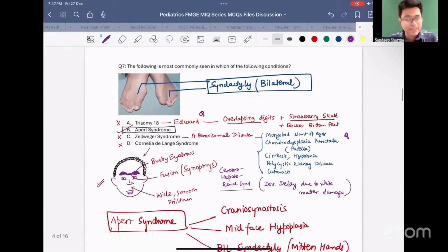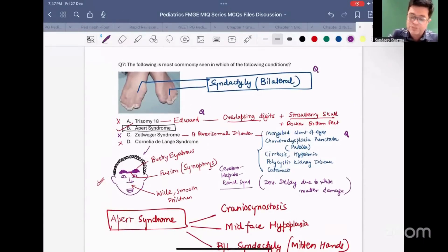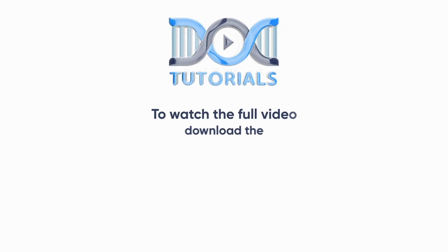This is syndactyly. Syndactyly photograph is also a past FMG MCQ. We have discussed all the MCQs. And I know that two of these syndromes might be new for you. Please add them to the notes. Don't try to overdo them. Let us see.